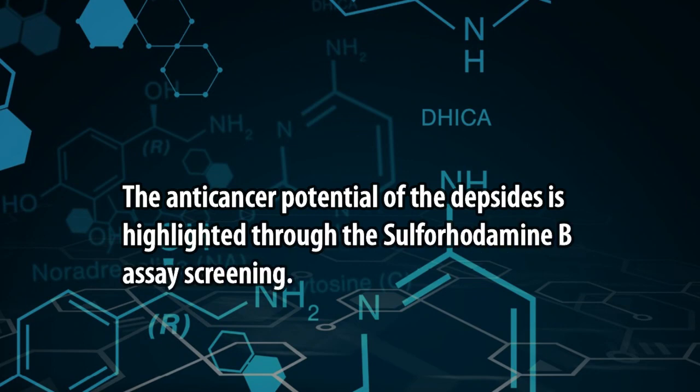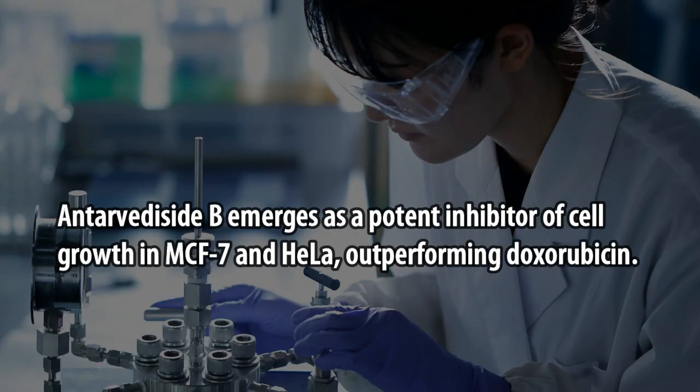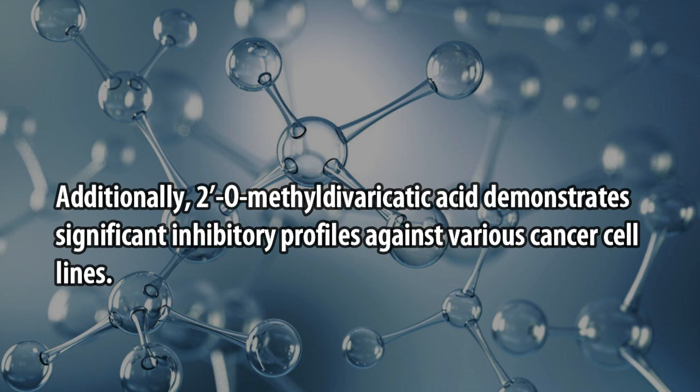The anti-cancer potential of the depsides is highlighted through the sulforhodamine B assay screening. Antavidacide B emerges as a potent inhibitor of cell growth in MCF7 and HeLa cell lines, outperforming doxorubicin. Additionally, 2-O-Methyl Divaricatic Acid demonstrates significant inhibitory profiles against various cancer cell lines.